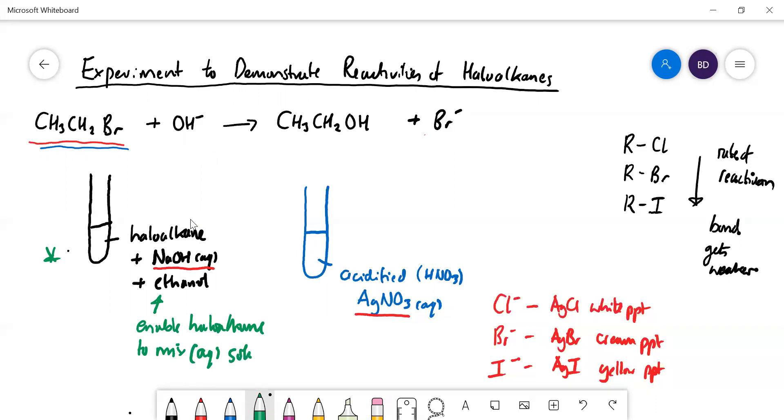Now at every minute or so what you're going to do is get a pipette and stick it in there, take a little bit of that out, and then you're going to add drops of that into the acidified silver nitrate.